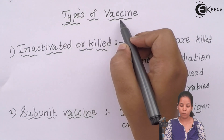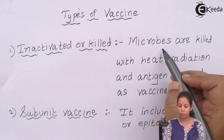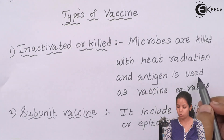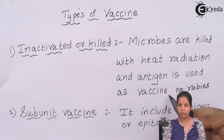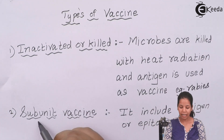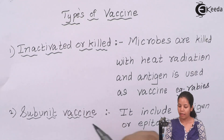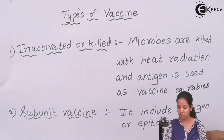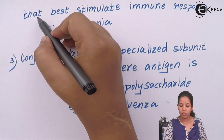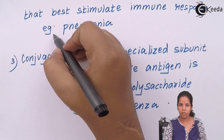Types of vaccines include inactivated or killed vaccines, where microbes are killed with heat or radiation and the antigen is used as the vaccine. An example of this is the hepatitis vaccine. The second kind is the subunit vaccine, which includes an antigen or epitope that best stimulates the immune response. An example would be the pneumonia vaccine.